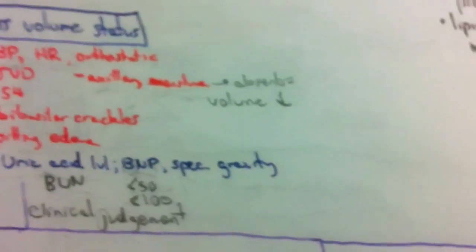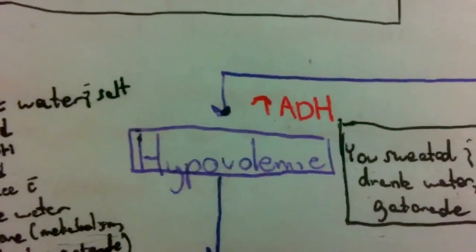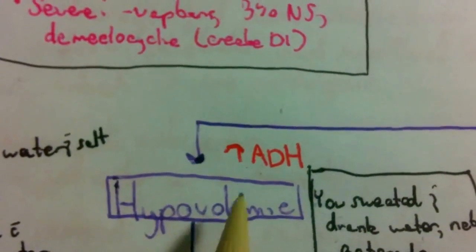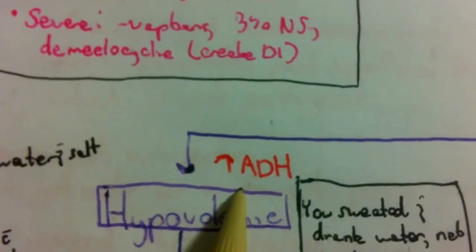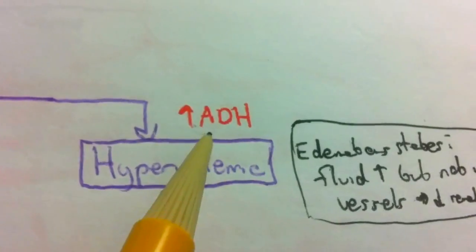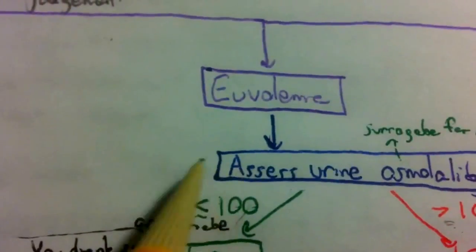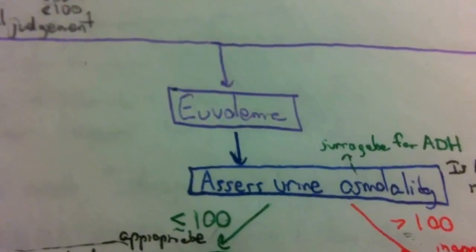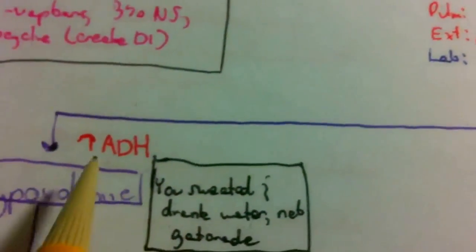Using all these tools together, you determine whether your patient is hypovolemic, euvolemic, or hypervolemic. Importantly, there is high ADH in almost every category - there is only one subset within euvolemia where we have low ADH.